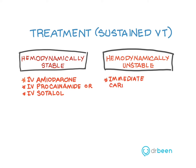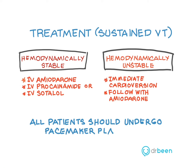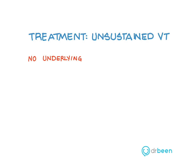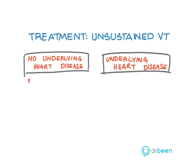If the patient is unstable, then immediate cardioversion followed by IV amiodarone is given. All patients with sustained ventricular tachycardia should undergo pacemaker placement. For unsustained ventricular tachycardia, if there is no underlying heart disease and the patient is asymptomatic, there is no need to treat. These patients are not at risk for increased cardiac death. However, if there is an underlying disease, such as an MI or left ventricular dysfunction, an ICD placement is needed.